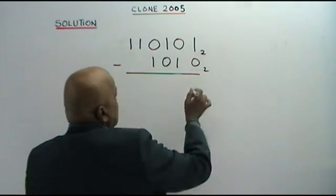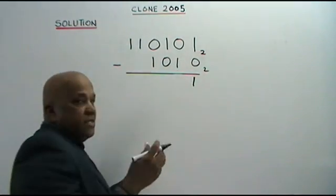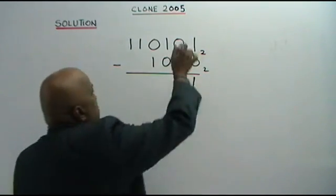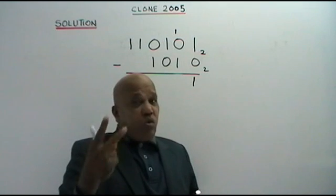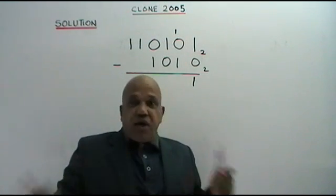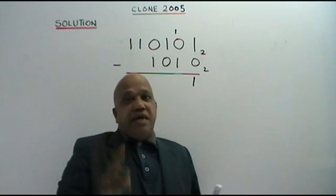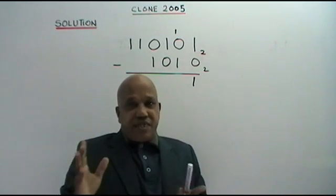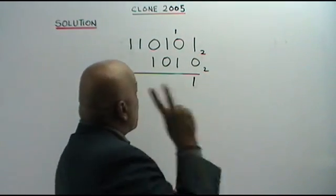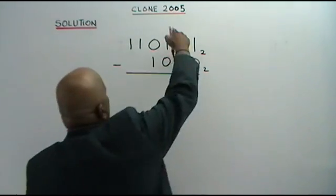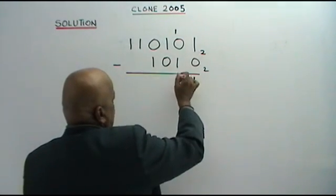1 minus 0 is 1. 0 minus 1 — you cannot. So what do you do? You borrow 1. When you borrow 1 in base 2, it means you borrow 2. In base 10, when we borrow 1, that means we are borrowing 10. Again, in base 2, you borrow 1, that means you borrow 2. 1, 0 is 2. 2 minus 1 is 1.